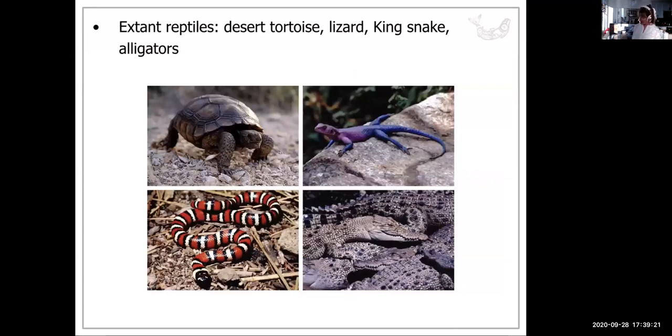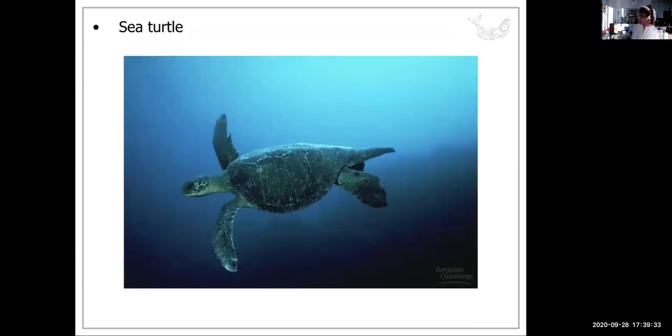So there are some examples. This is a desert tortoise on the upper left. A lizard, upper right. A king snake, the lower left. And an alligator on the lower right.